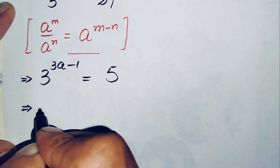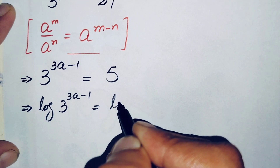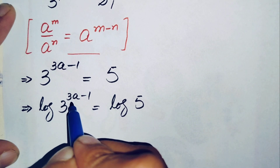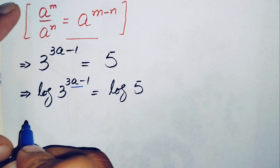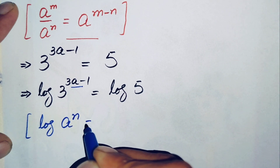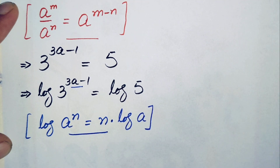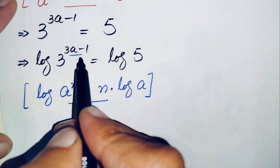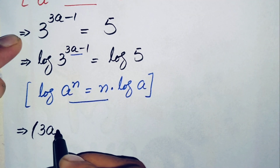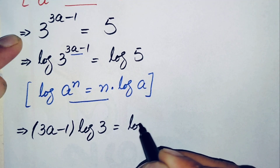Now we will take log on both sides. So this becomes log of 3 raised to power 3a minus 1, which is equal to log of 5. On the left-hand side we use the logarithm property that log of a raised to power n can be written as n times log of a. Moving the power 3a minus 1 to the front gives us: 3a minus 1 times log 3 equals log 5.